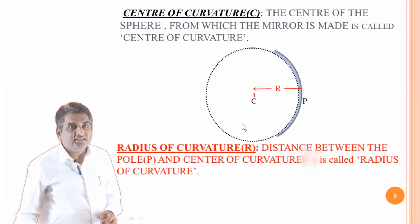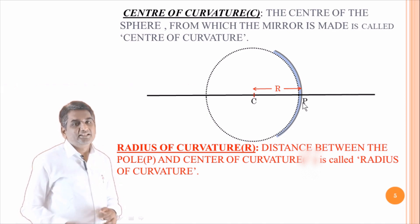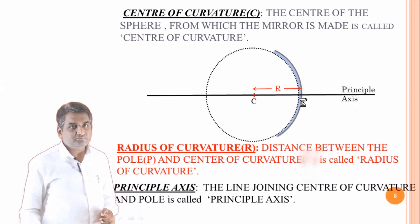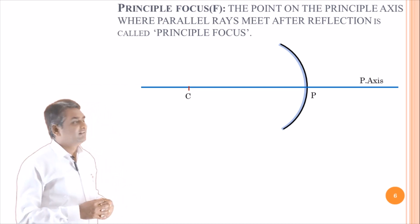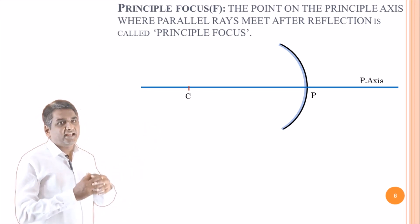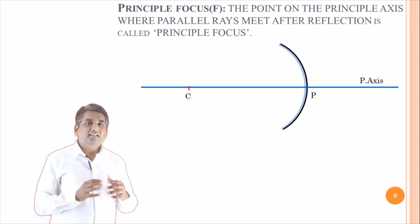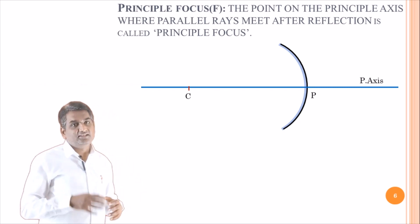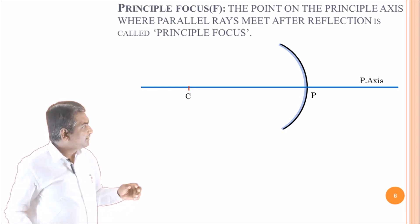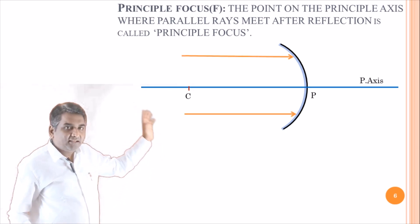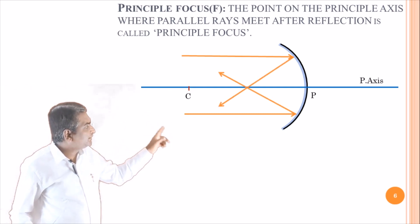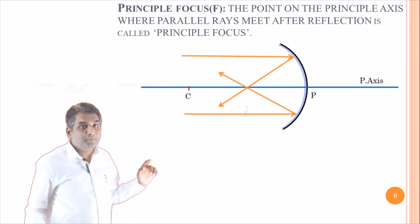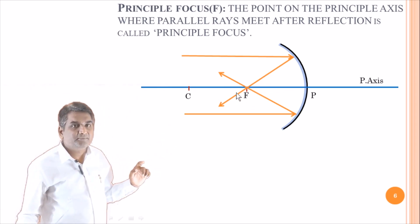The line joining the center C and pole P is called the principal axis. The next definition we are going to discuss is the principal focus. The point on the principal axis where parallel rays meet after reflection is called the principal focus. These are the parallel rays which are incident on the concave mirror, and after reflection they meet at a point on the principal axis — this point is called the principal focus.